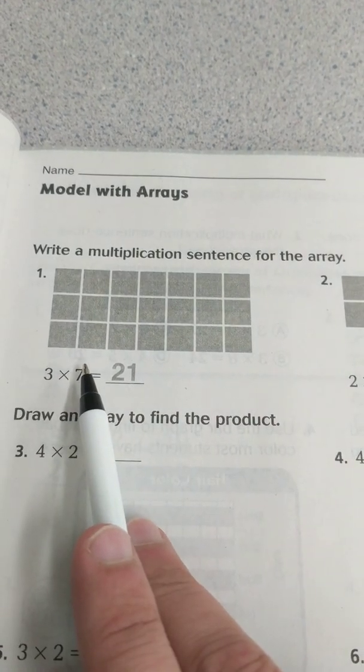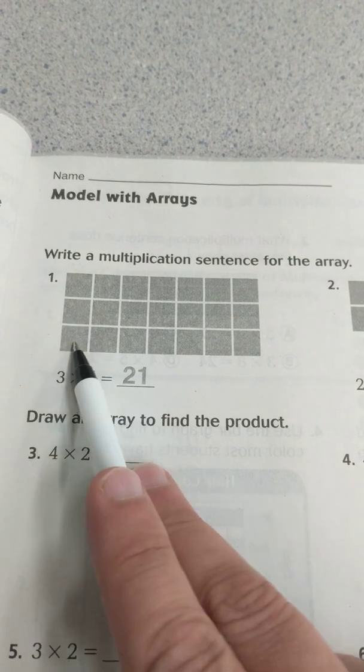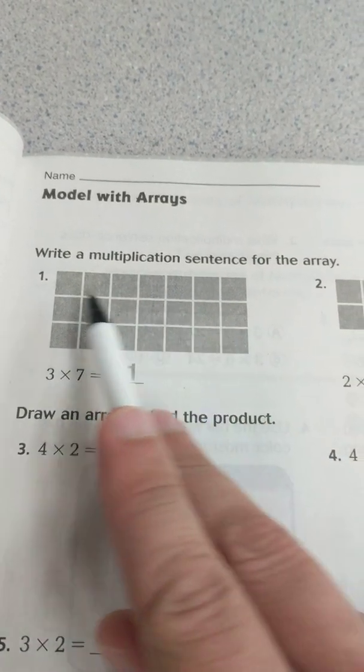So I'm going to look at what they did already here. So it's 3 times 7. So they have 3 rows and 7 items.